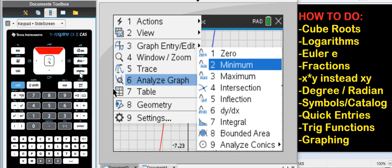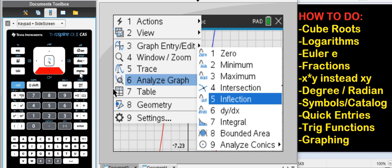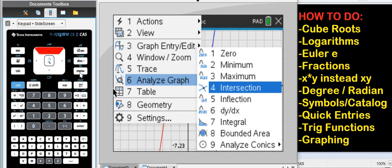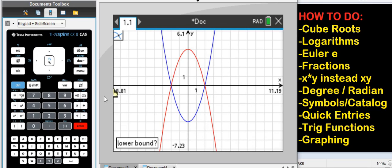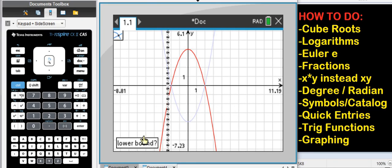You can see the zeros, min, max, intersection point. Let's do intersection. So, look here on the bottom. It says lower bound. It just has to be somewhere left of the actual intersection. Press enter. Now it's asking for the upper bound. Got to be somewhere to the right. And it's already previewing the intersection, negative 2, 0.